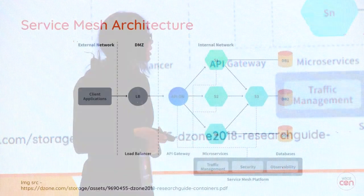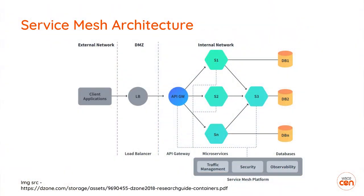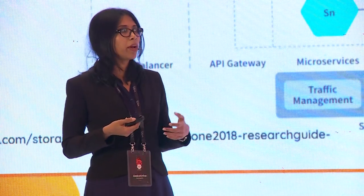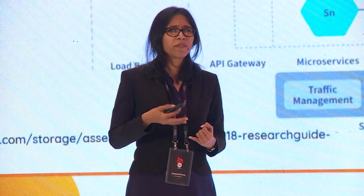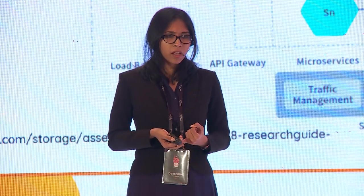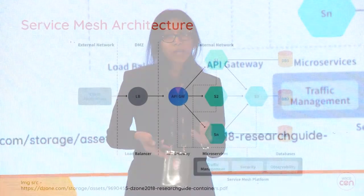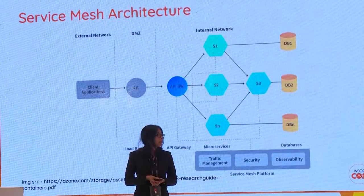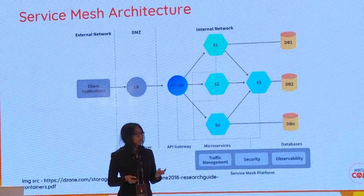The service mesh platform handles traffic management, security, and observability. When learning Kubernetes, you might wonder why you need service mesh when you already have services and ingresses. The answer is that service mesh gives you more capabilities — you can do complex routing and achieve other advanced functionality.